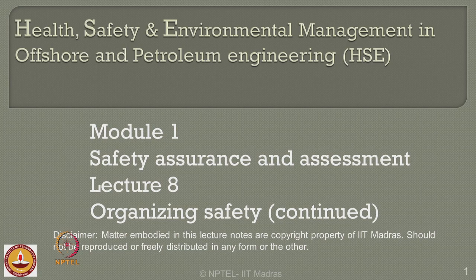Dear friends, we are continuing on lecture module 1, which is focused on safety assurance and assessment. In lecture 8 today, we will talk about organizing safety with another example. In the last lecture, we discussed how safety organization could prevent or intelligently reduce economic loss in case of a nuclear reactor disaster that happened recently in Japan. Today, I will take up another interesting example which could result from a manmade disaster, and discuss how organizing safety or risk management can help assess and minimize the loss in such cases.